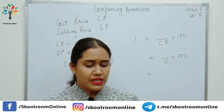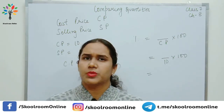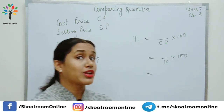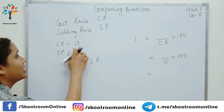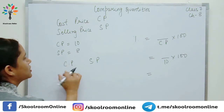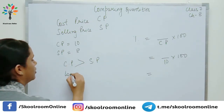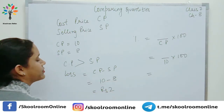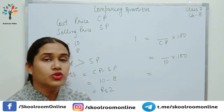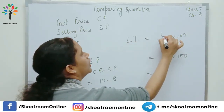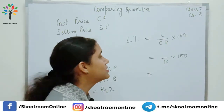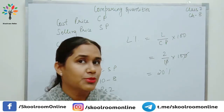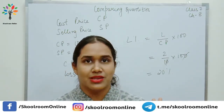अब दूसरा case लेते हैं: मैंने 10 रुपीज का marker खरीदा, लेकिन मैंने इसको sell किया 8 रुपीज में. तो मुझे loss हुआ — मैंने नुकसान में बेच दिया. Cost price 10 है, selling price 8 है, तो cost price बड़ा है, selling price छोटा है — loss हो गया. Loss = CP minus SP = 2 रुपीज. Loss percentage = loss upon cost price into 100 = 20%. तो मैंने 20% के नुकसान पे अपना marker 8 रुपीज में sell कर दिया.